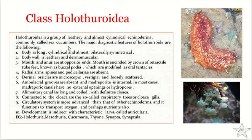Sea cucumbers are a group of leathery and almost cylindrical echinoderms. They are found in all depths in all oceans, where they crawl over hard substrates or burrow through softer substrates. Sea cucumbers have no arms. The body is long, cylindrical, and almost bilaterally symmetrical.